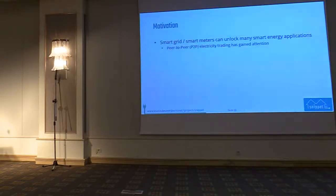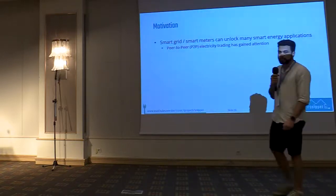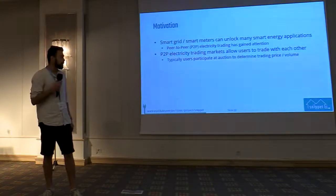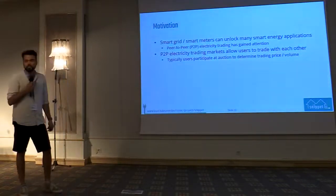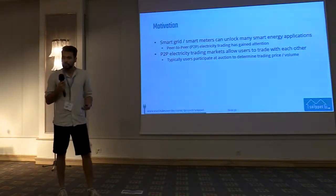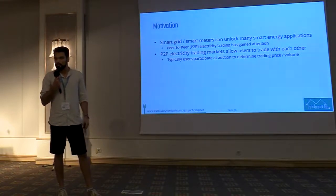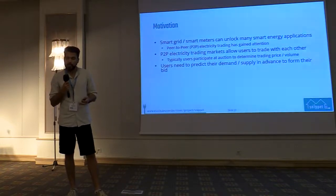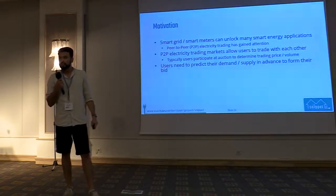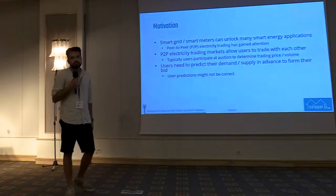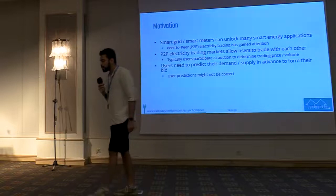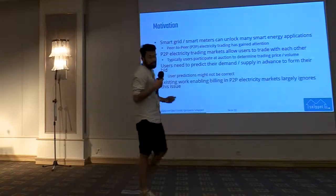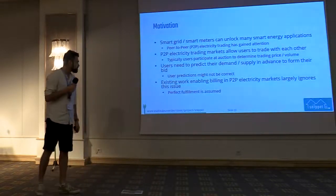Smart meters can unlock a lot of smart energy applications, and peer-to-peer electricity trading has gained quite a lot of attention — it allows users to trade electricity with each other using some kind of auction mechanism to determine trading price and volume. Mariana spoke about how that can be done in a privacy-preserving way, and Tony spoke about how predictions can also be done in a privacy-preserving way. But the problem is that these predictions might not be correct — I might predict I'll use 2 kWh in the next trading slot but only use 1.5 kWh. The existing literature largely ignores this issue and usually assumes perfect fulfillment.